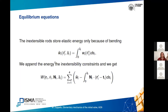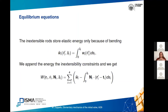The rods are inextensible, so we append inextensibility constraints to the energy. The full energy expression consists of the sum of all bending energies of the four rods, plus a second term involving N_i, the tension along each rod, which expresses the inextensibility constraints stating that the derivative of r_i is exactly the tangent vector.